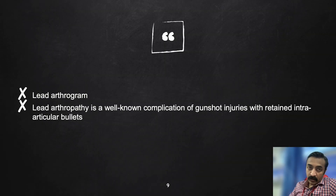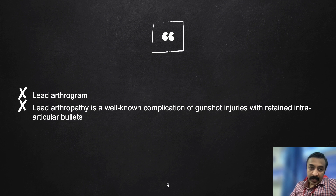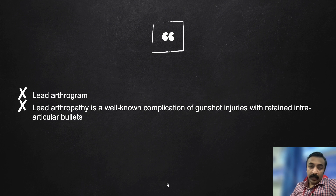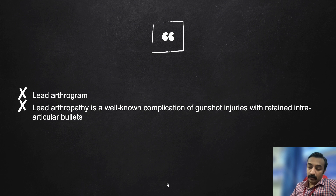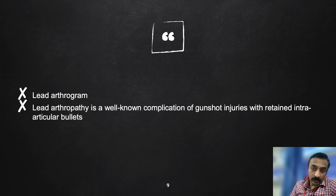The answer again is lead. This classical appearance on X-ray is called lead arthrogram, and lead arthrography is a well-known complication of gunshot injuries with retained intra-articular bullets. These lead bullets remain in the synovium and slowly release lead into the circulation, leading to complications similar to chronic lead toxicity.